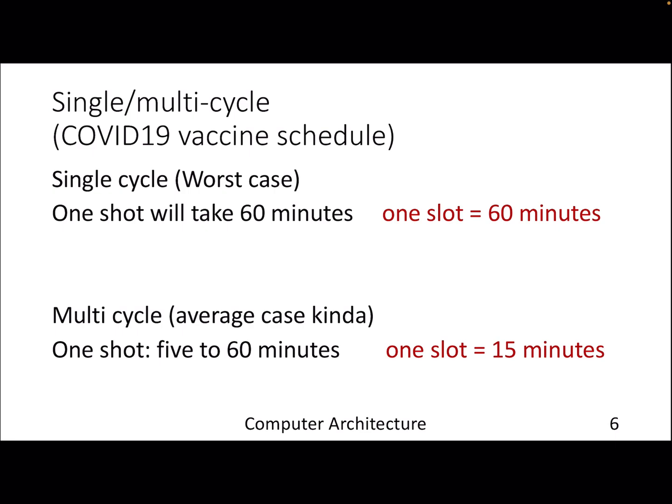If we try to correlate this notion of single-cycle and multi-cycle with the current COVID-19 vaccine schedule, you can assume that the schedule designed through single-cycle is assuming everyone will take around one hour to get the vaccine. You go there, make sure all the verification is done—multiple rounds of verification—then you take the vaccine, and then you wait for half an hour to make sure there is no side effect. That's kind of the worst case 60 minute schedule.